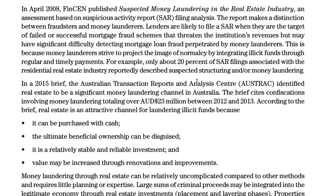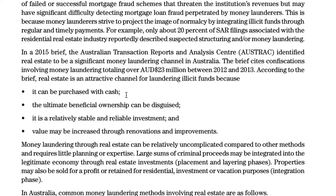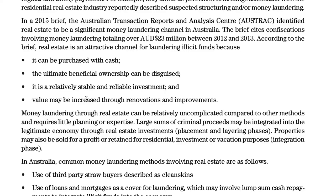In a 2015 brief, the Australian Transaction Reports and Analysis Centre (AUSTRAC) identified real estate as a significant money laundering channel in Australia — it's off the charts. The brief cites confiscations involving money laundering totaling over $23 million between 2012 and 2013 — that's like a couple of homes in Sydney. According to the brief, real estate is an attractive channel for laundering illicit funds because it can be purchased with cash, though this is changing. The ultimate beneficial ownership can be disguised — this is significant in America because many properties are purchased through LLCs, especially investment properties. Real estate is also a relatively stable and reliable investment.